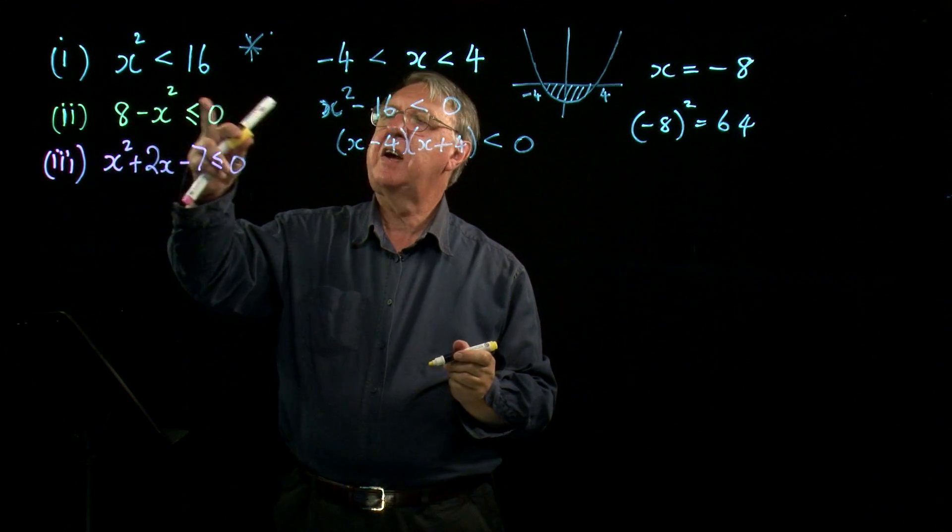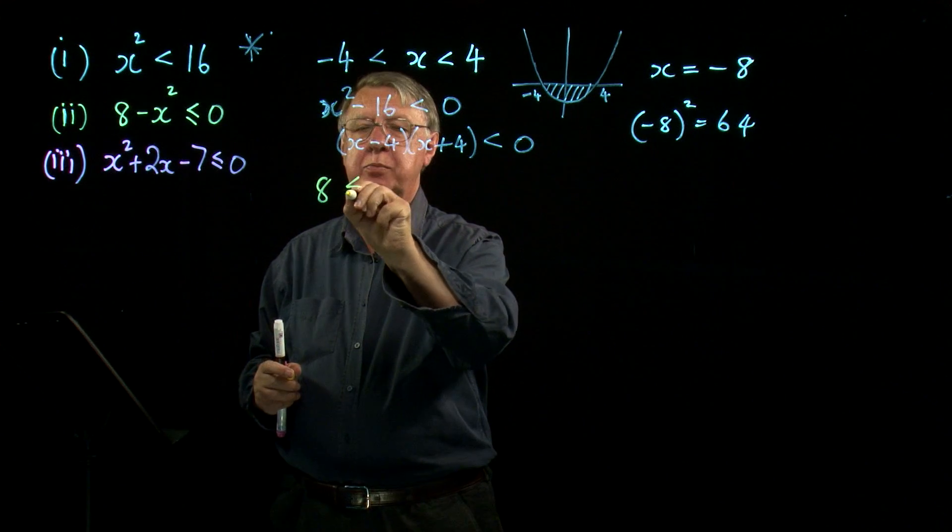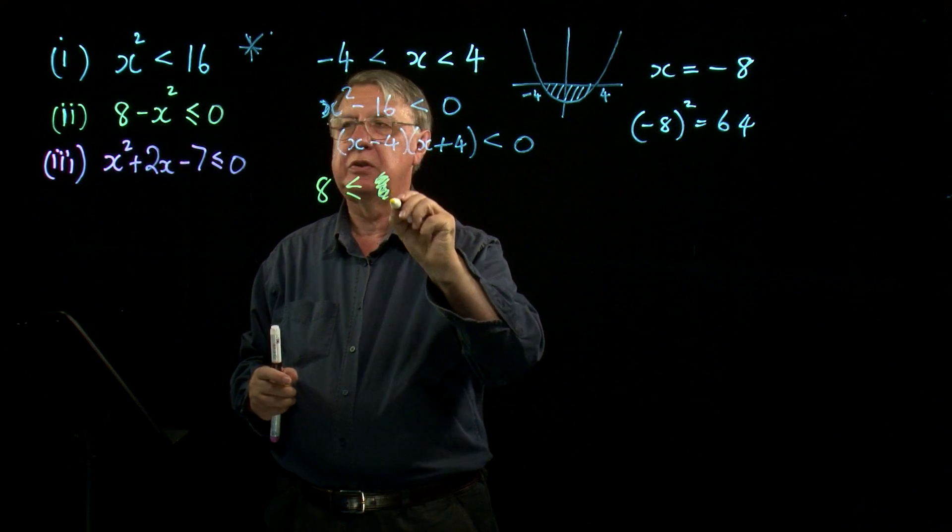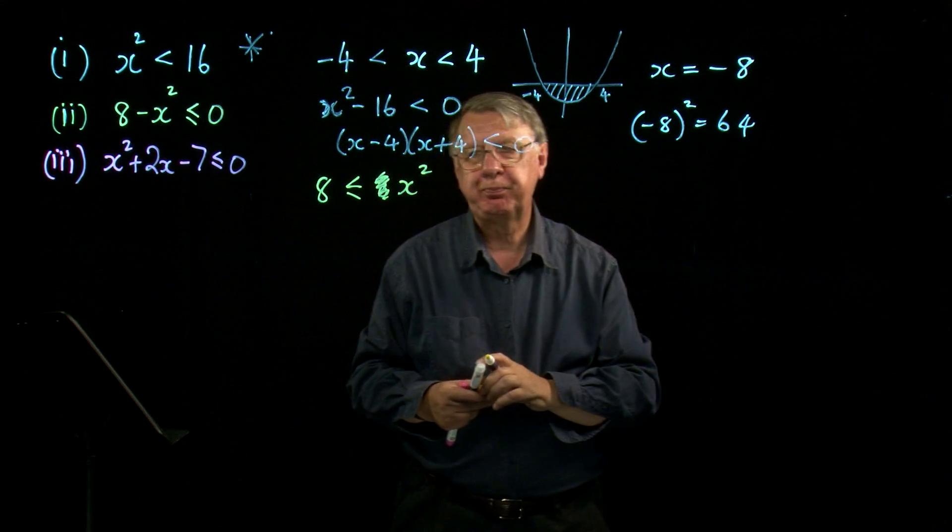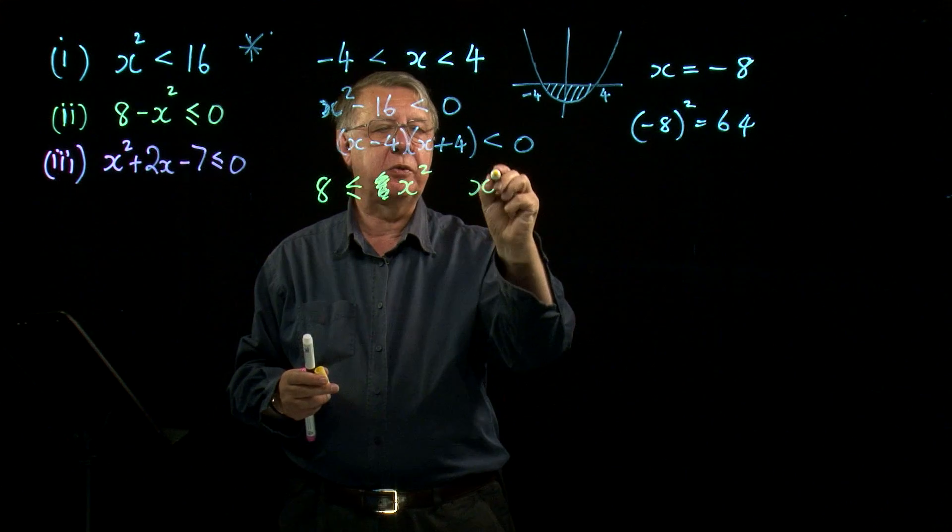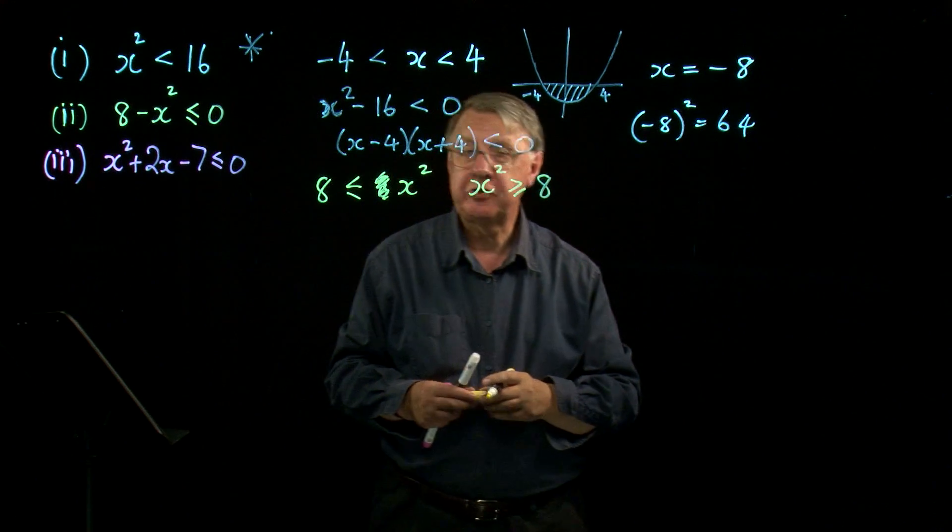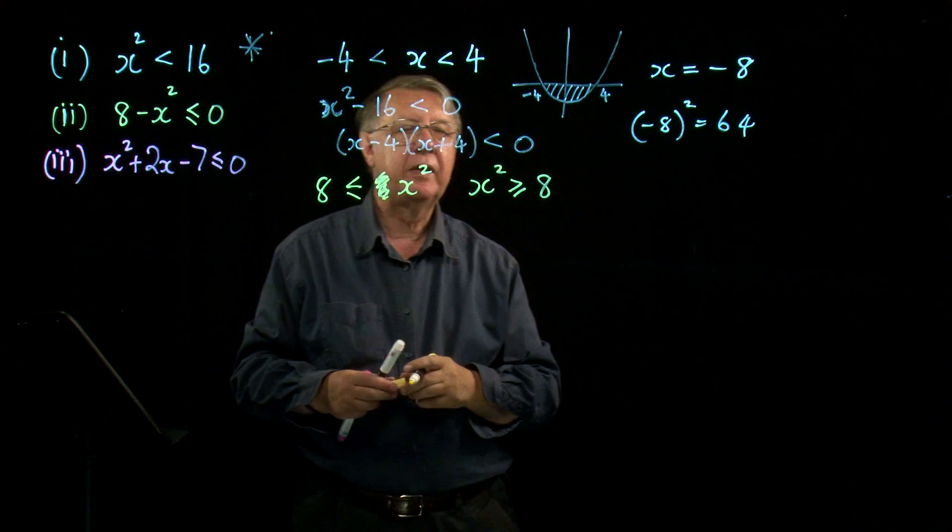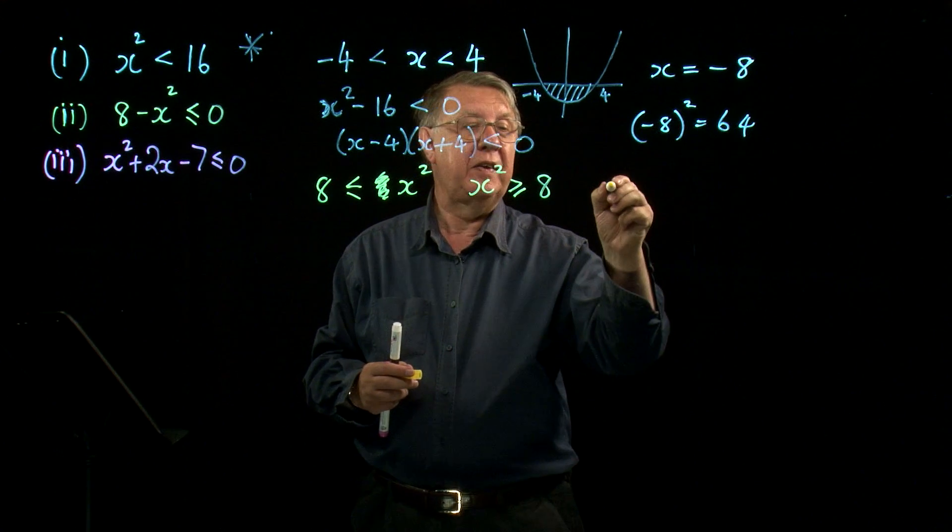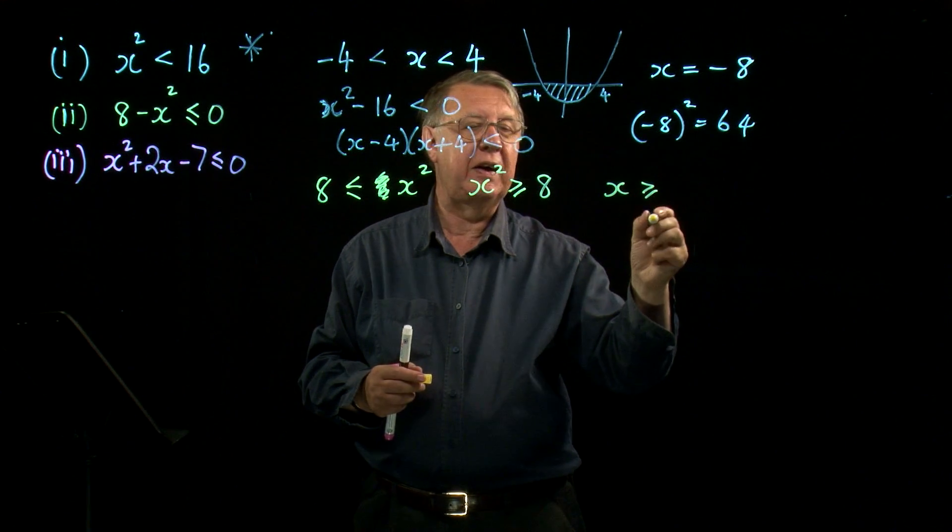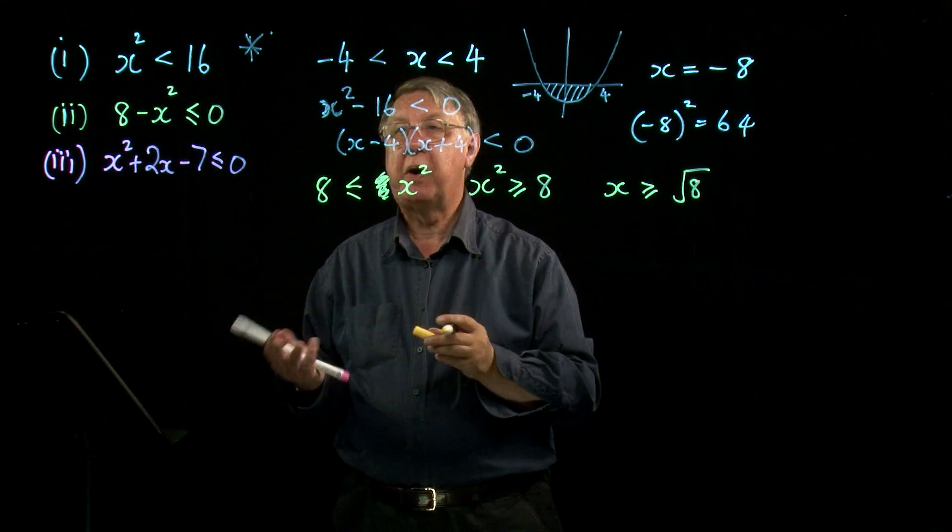Now, the temptation here is to put the 8, whoops, let's try and do the right thing, put the x squared on that side and say, okay, that means that x squared is greater than or equal to 8, which is true. And then, again, make the foolish mistake of saying that means that x has got to be greater than the square root of 8, which is partly true.